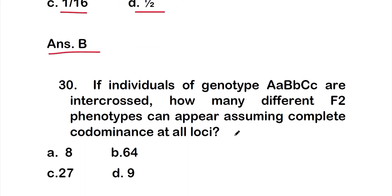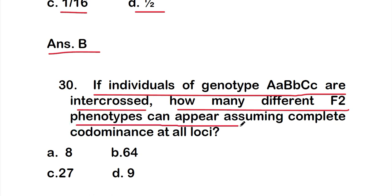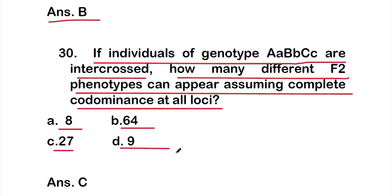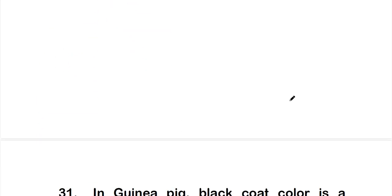Question 30: If individuals of genotype AaBbCc are intercrossed, how many different F2 phenotypes can appear assuming complete codominance at all loci? Options are 8, 64, 27, or 9. The right answer is option C — 27 different phenotypes.